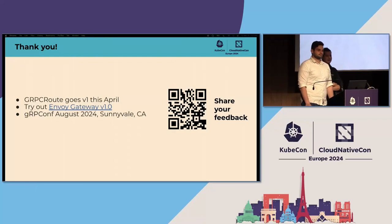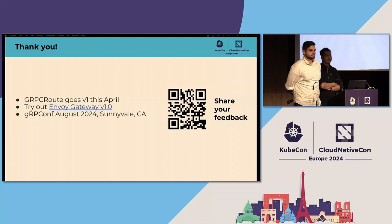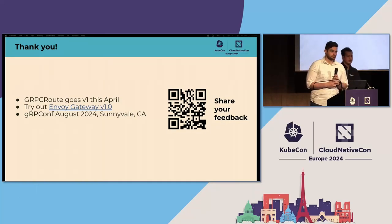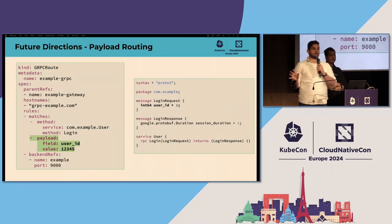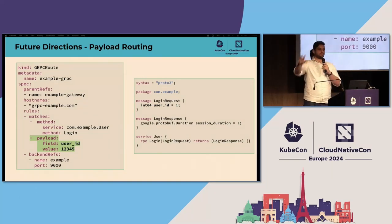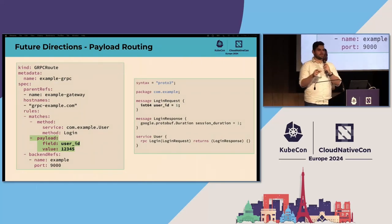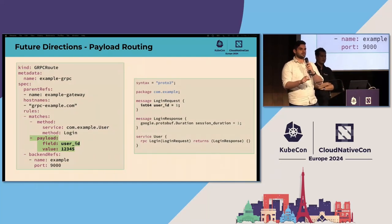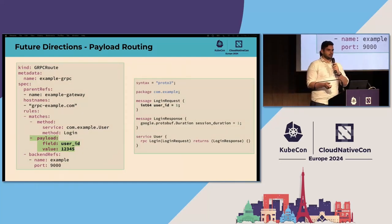Thank you, it was a great talk. I have a question: does any of this actually work in the case of TLS-encrypted gRPC — like all of them, or are there some limitations? I'm particularly interested in payload routing — can you tell in a few words how it works? Sure. This is a future direction, not yet implemented or in the spec. It would work only with TLS termination because obviously you need to see the bytes in order to do the payload routing, but that should theoretically work out of the box.